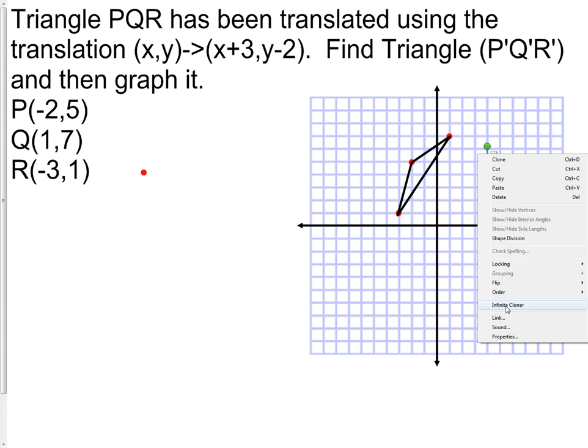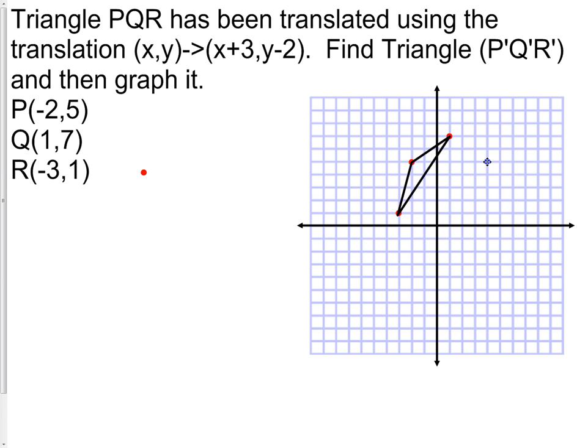Our original point would be Q, our new point would be Q prime. We'll label those in a moment. Next we need to move the point here that was at (-2, 5). I need to move it three to the right and then down two. There's our new point. And lastly we're going to move the point that was at (-3, 1), and we again move this three to the right - one, two, three - and down two.